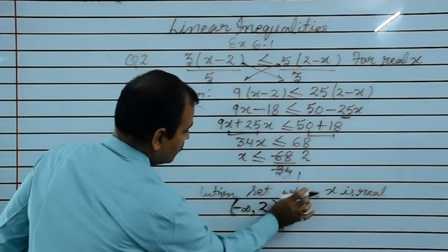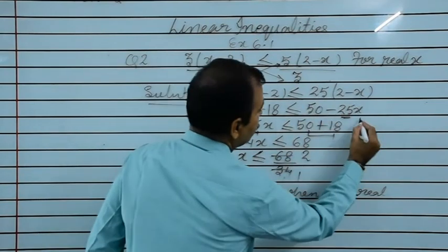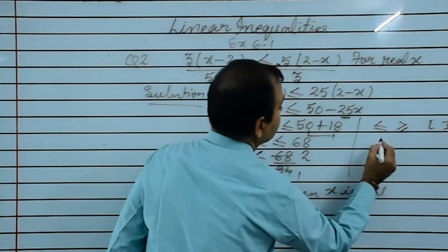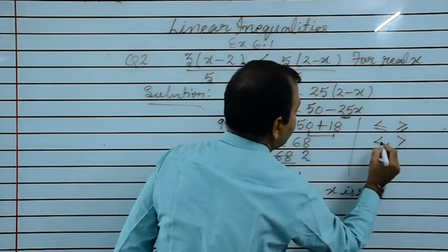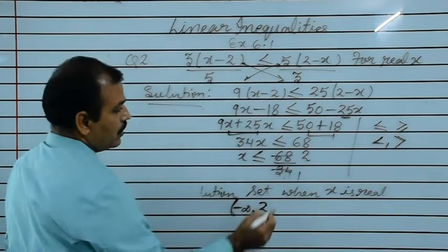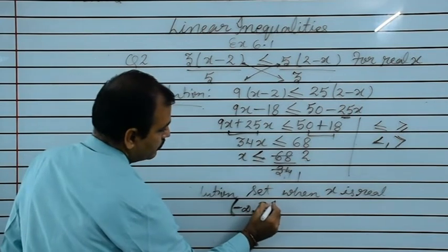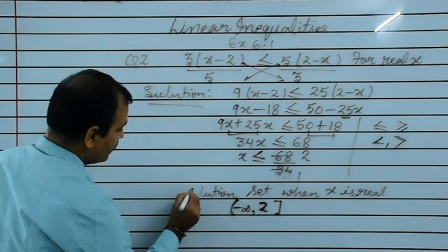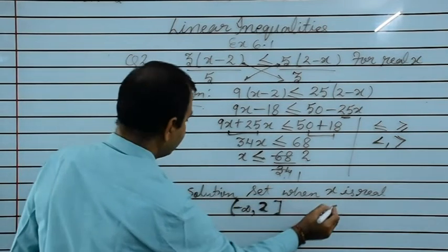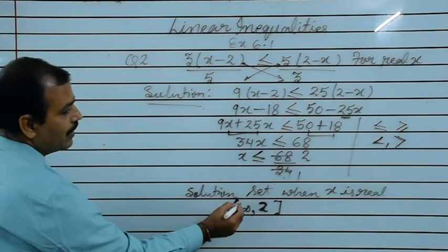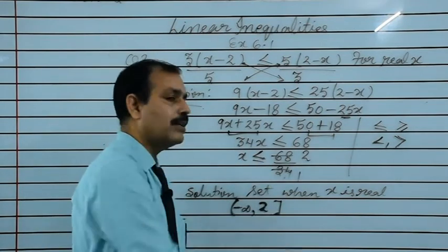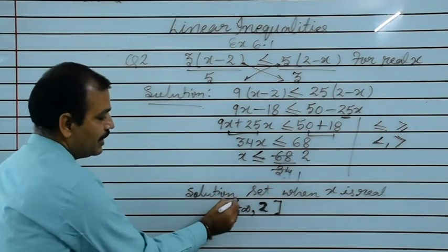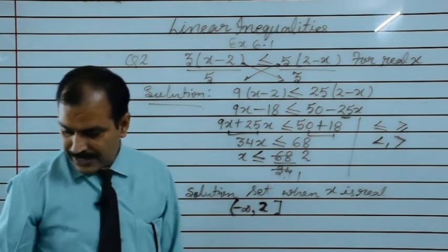Now, one thing to remember: if the sign is less than equals to or greater than equals to, we use big bracket (closed interval). If the sign is less than or greater than, we use small bracket (open interval). So for x less than equals to 2, solution set when x is real: minus infinity to 2 with a closed bracket at 2, written as (minus infinity, 2].